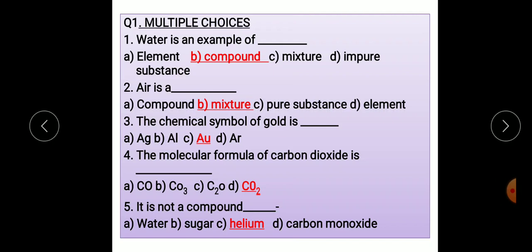Second, air is a: A. Compound, B. Mixture, C. Pure Substance, D. Element. The correct option is option B, Mixture. Air is a mixture of many gases.